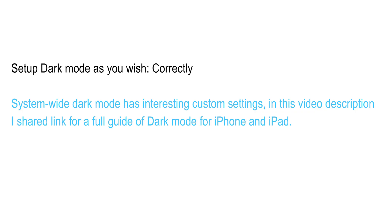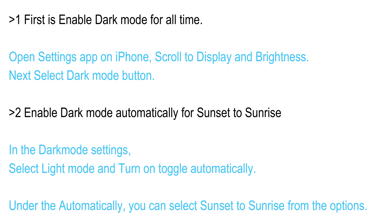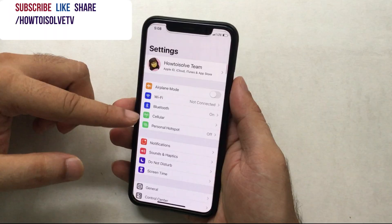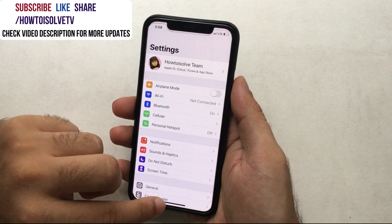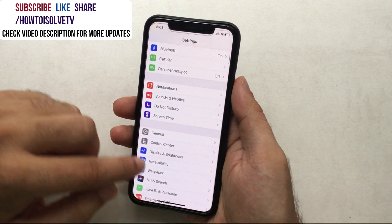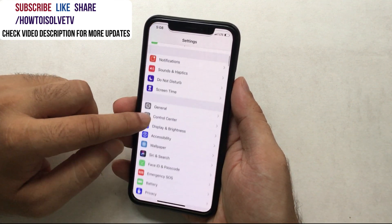Set up dark mode as you wish. System-wide dark mode has interesting custom settings — in the video description I've shared a link for a full guide of dark mode for iPhone and iPad. To enable dark mode for all time: open the Settings app on iPhone, scroll to Display and Brightness, and select the Dark mode button.